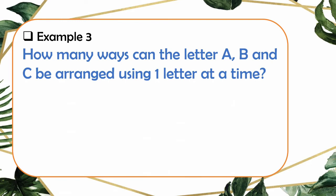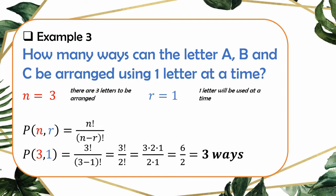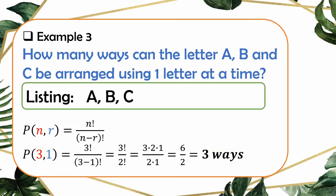Now we arrange the same letters A, B, and C but use only one letter at a time, so R equals 1. Our N is still 3. Substituting into the formula: 3 factorial over (3 minus 1) factorial equals 3 factorial over 2 factorial. Expanding: (3 times 2 times 1) divided by (2 times 1) equals 6 divided by 2, giving us 3 ways. The three ways are A, B, and C. Very good — you are now getting how to solve permutation problems using P(N, R).